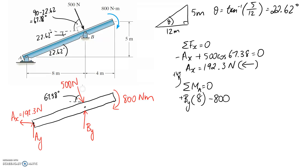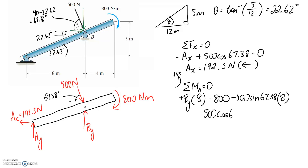The tricky one is the 500N force because we need the distances back to point A. Starting with the vertical part: it's going to be 500 sine 67.38. The distance back to point A for the vertical component is the 8 meters. The vertical component is going to try and push us clockwise about point A, so I'm going to make it negative. We then need to consider the horizontal part, which is going to be 500 cos 67.38 multiplied by the horizontal distance.